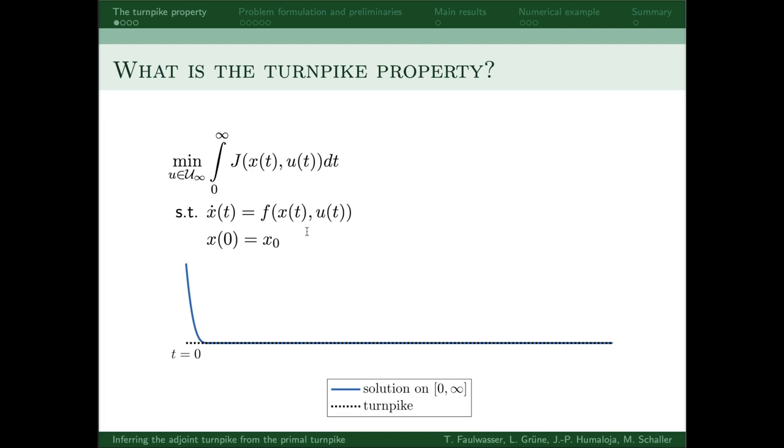Let's just assume that this optimal control problem has at least one optimal solution, which might look like this. So basically we see that the optimal solution converges to a steady state, which is the turnpike.